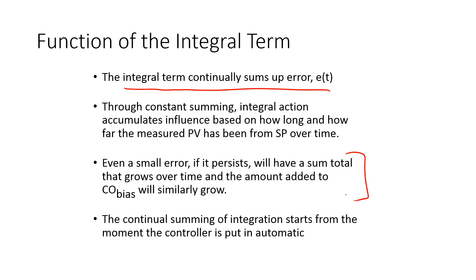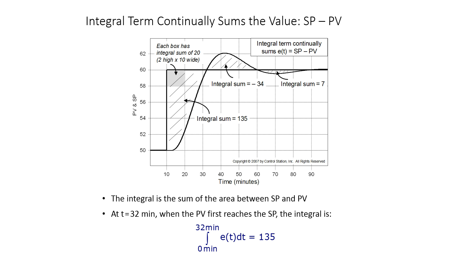This integral term in the proportional integral controller is essentially just going to sum up that error. Even if a small error persists, the sum total will grow over time, and that amount will be added to the controller output. This is another way to do the integral, to do blocks and add up those blocks. The area under the curve is what you add up.